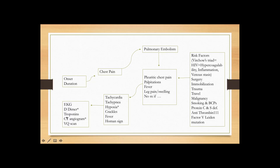A low D-dimer will rule out PE, but a high D-dimer doesn't necessarily mean PE. Troponins may be drawn and are usually normal. The gold standard test for PE is CT angiogram, which allows you to say with near certainty that a patient has PE. Traditionally, a spiral CT of the chest is the regular test done to look for PE, and the gold standard is CT angiogram. VQ scans were used in the past but are being used less now.